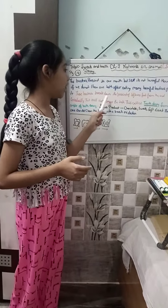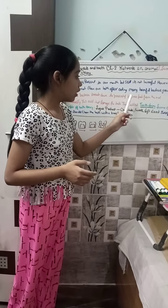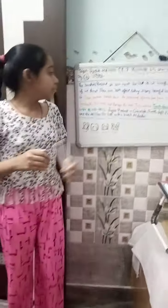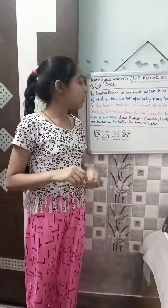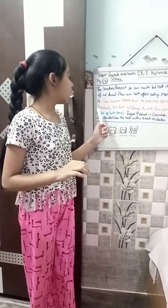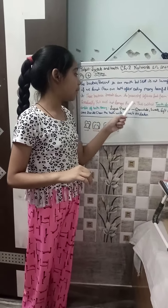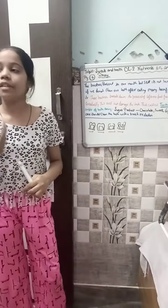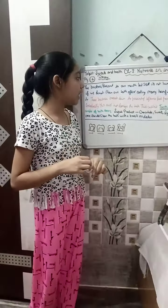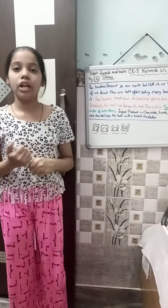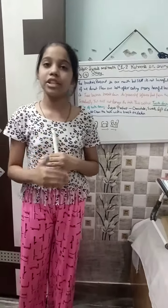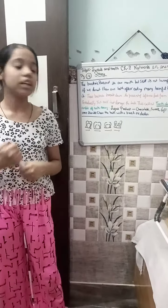These bacteria break down the leftover food and produce acid. Gradually, this acid damages the teeth — this is called tooth decay. The bacteria break down food and produce harmful acid, and that bacteria damages our teeth, which is called tooth decay.